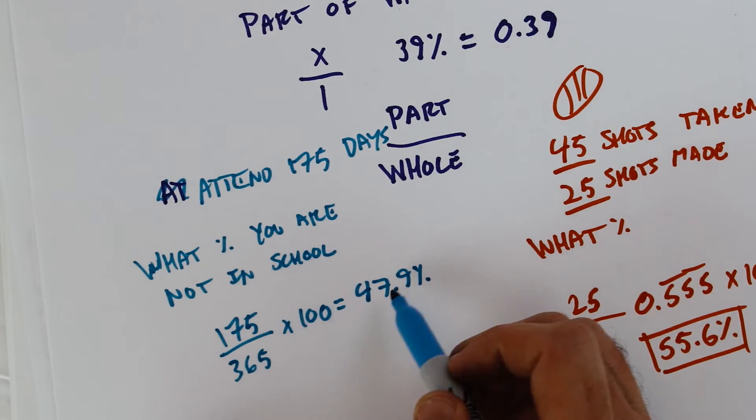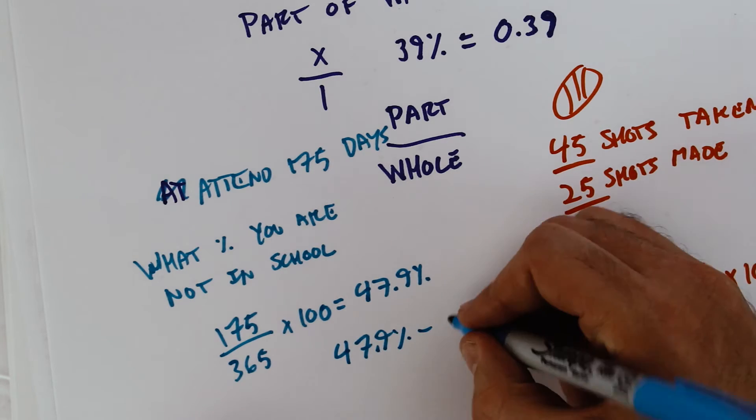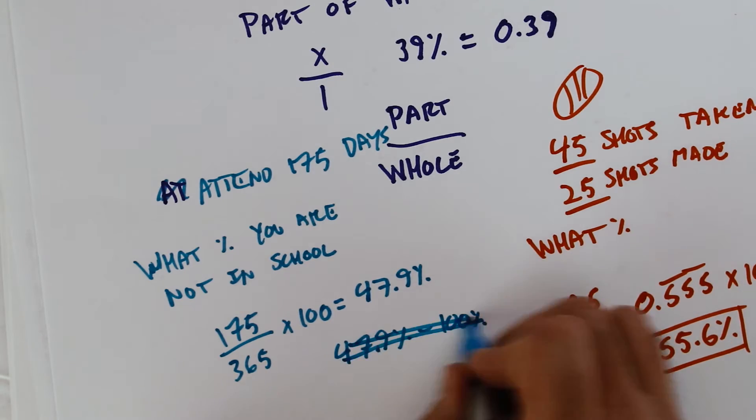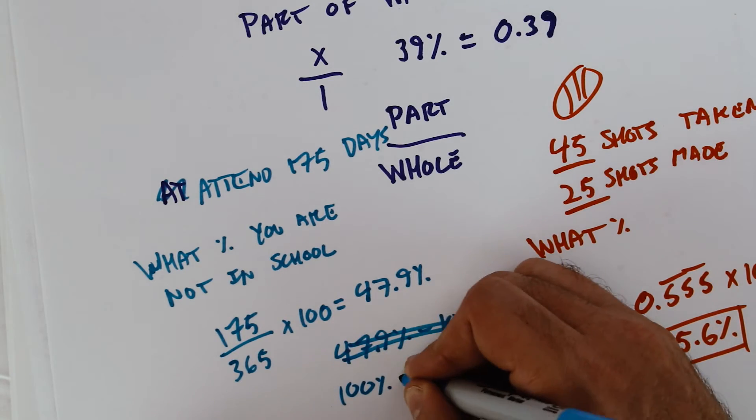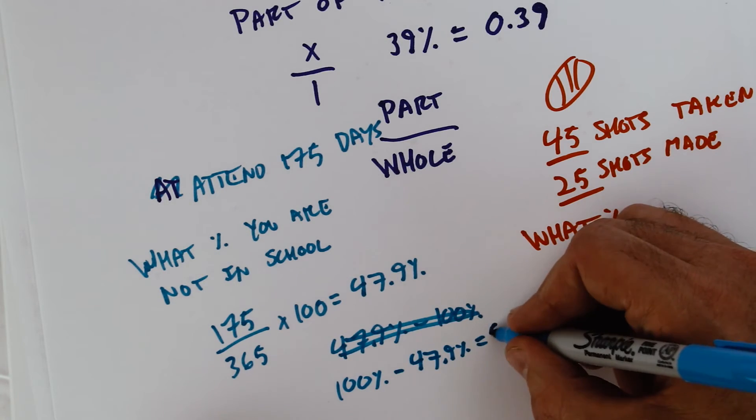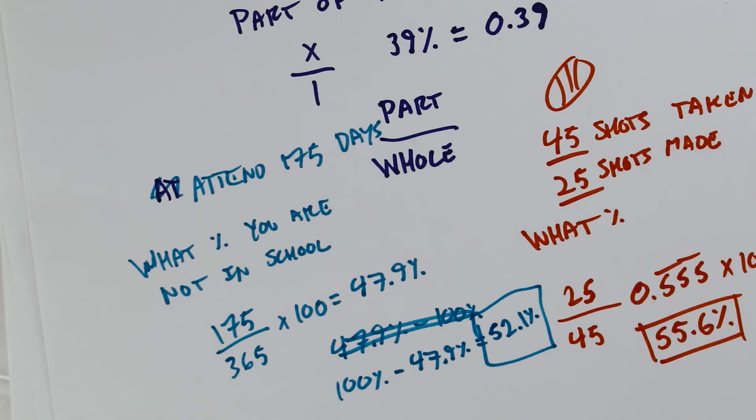Well, you can take this number and say 47.9% minus the whole of 100% for all the days of the year. Sorry, I did that backwards. So 100% minus 47.9, and this gives you the remainder of 52.1%. So that's the percent of days that you were not in school.